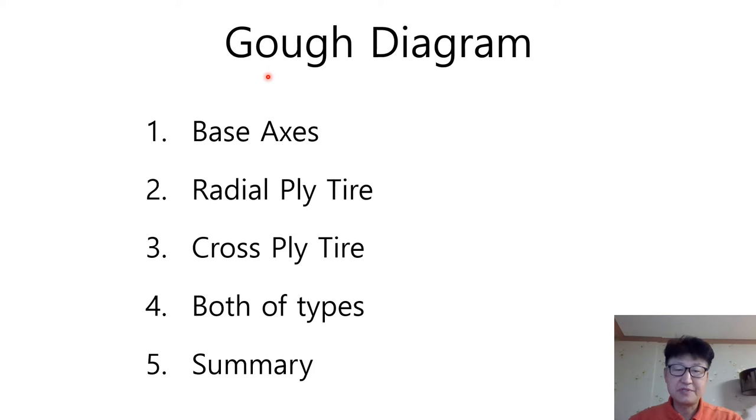Hi, guys. Today's topic is GO Diagram. The contents will be base axis, radial ply tire, cross ply tire, both types, and summary.